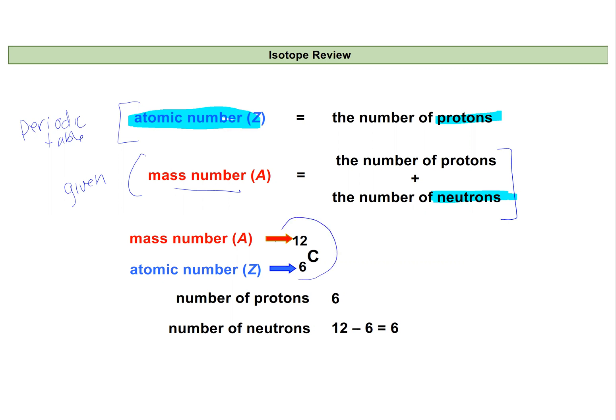So if you saw an element symbol like this, carbon-12, that's the same as writing carbon-12 as well. The atomic number six tells you that our element is carbon and it tells you that it has six protons. My mass number is 12, and so I'll subtract my atomic number from my mass number to get six neutrons.